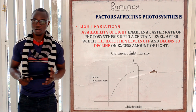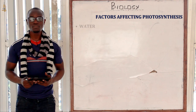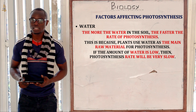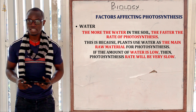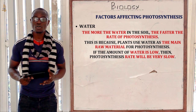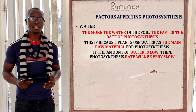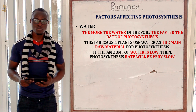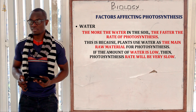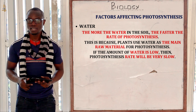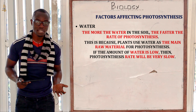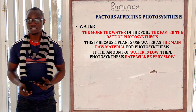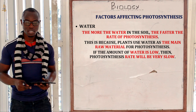The next factor is water. The more the water in the environment, the more the plants will photosynthesize. This is because water makes the plant cells turgid, thereby the leaves are exposed to the environment accordingly, sunlight hits the leaves, photolysis takes place, and photosynthesis proceeds.